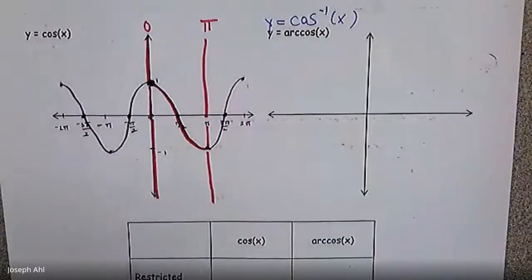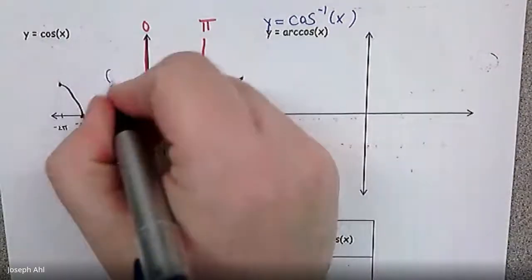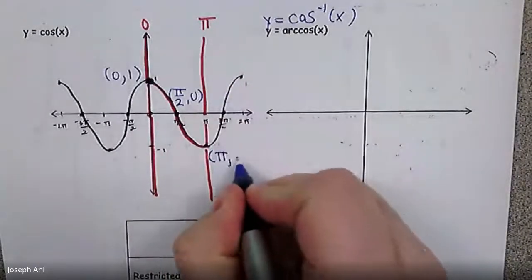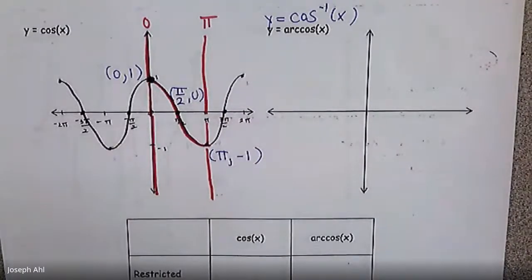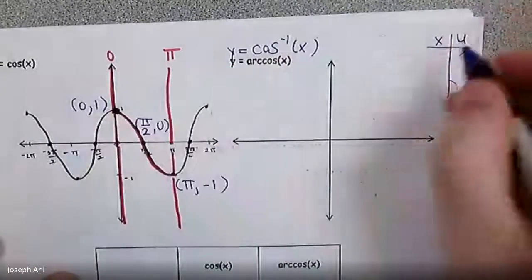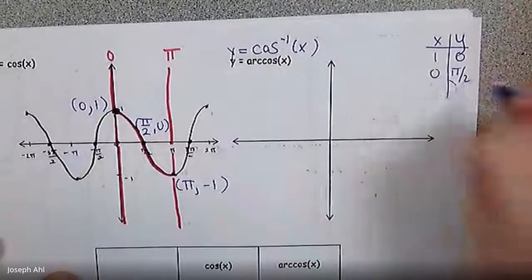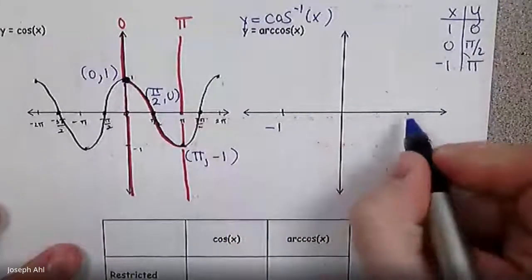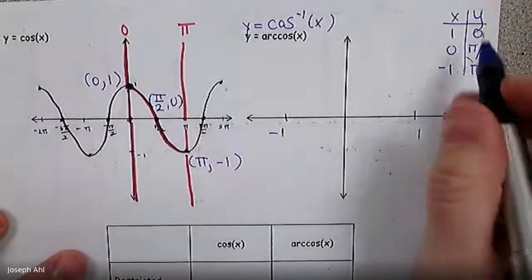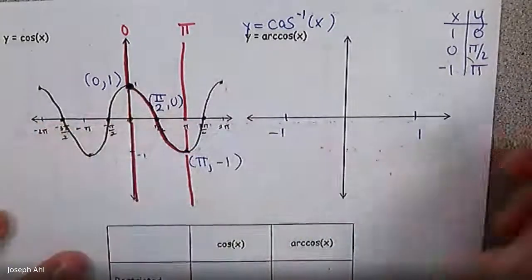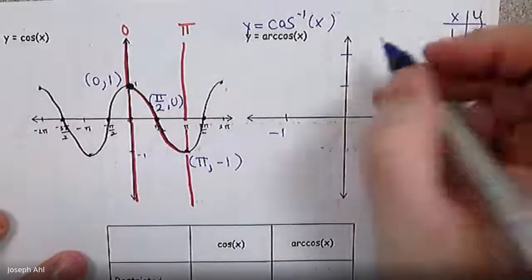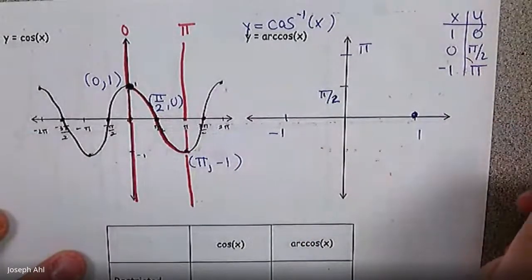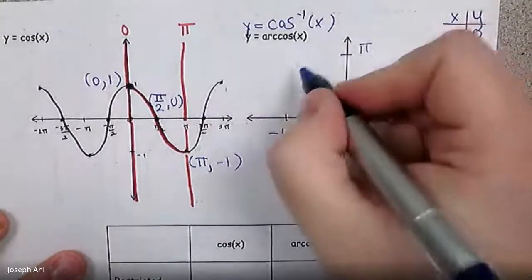We're going to capture these three points: (0, 1), (π/2, 0), and (π, −1). Then we flip those coordinates around. Making a quick table: (1, 0), (0, π/2), and (−1, π). The domain goes from −1 to positive 1, so the x-axis runs from −1 to 1. The range has no negative y values this time — we're going from 0 up to π, with π/2 in the middle.